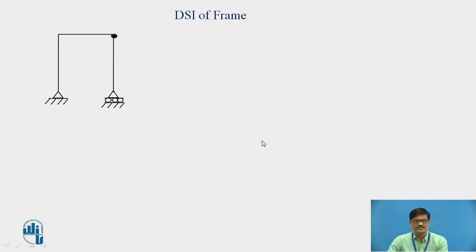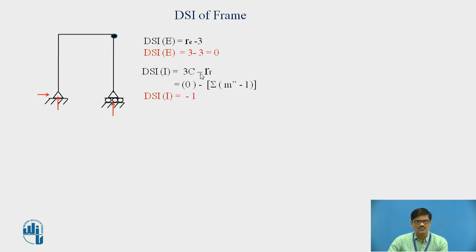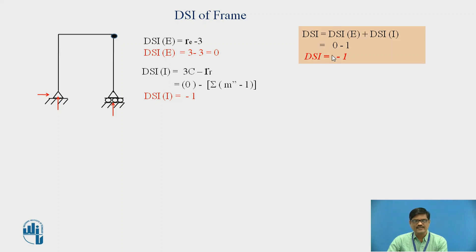Let us discuss this problem with the same steps. First, we find the external reactions. The external indeterminacy = RE minus 3. Here RE is 3, so it becomes 0. For internal indeterminacy, 3C minus RR — we don't have any loops in this structure, therefore that will be 0. There is one hinge here, so released reactions will be present. Released reaction = M'' minus 1, summed over all joints. We have only one joint with two members meeting. Therefore, it will be 2 minus 1 = 1, giving RR = 1, and internal indeterminacy = 0 minus 1 = minus 1. Total DSI = minus 1.